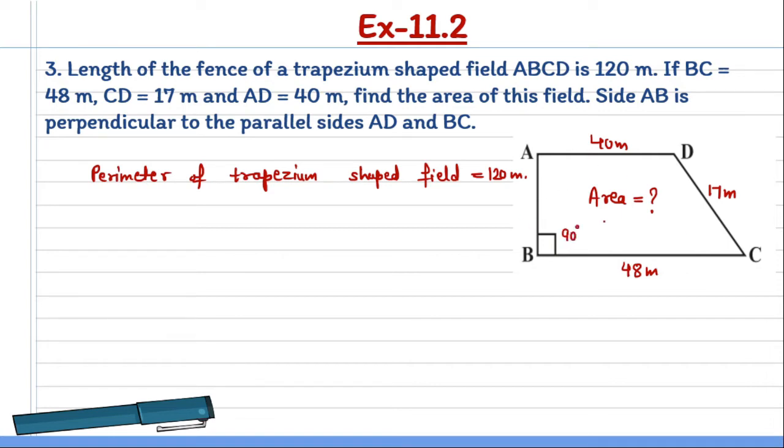So, to find the trapezium area, we need the length of parallel sides. These are both parallel sides, and the distance between them, which we call height. So we need to find this height.